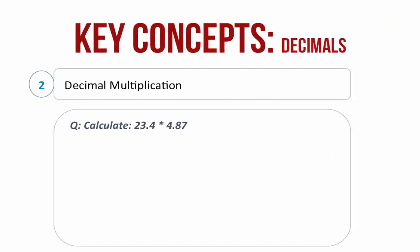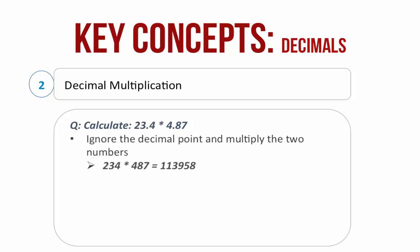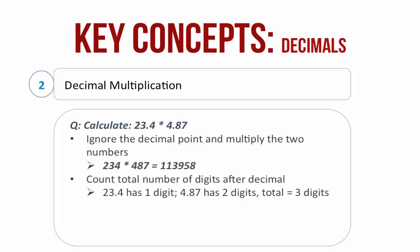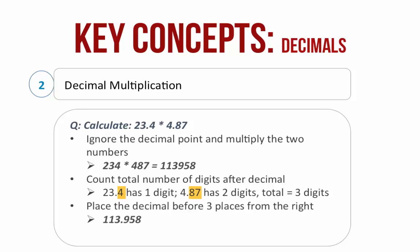Decimal multiplication. Let's take an example: calculate 23.4 into 4.87. Ignore the decimal point and multiply the two numbers. 234 into 487 is equal to 113958. Count the total number of digits after the decimal: 23.4 has one digit and 4.87 has two digits, so there are a total of three digits. Place the decimal before three places from the right. So the answer is 113.958.